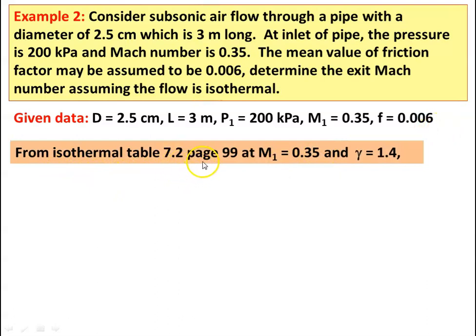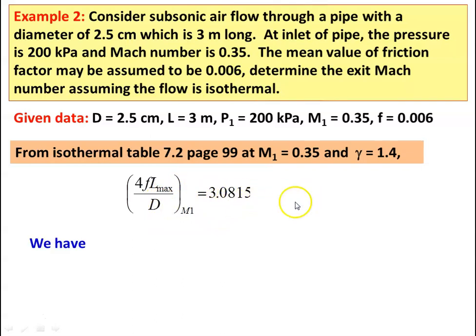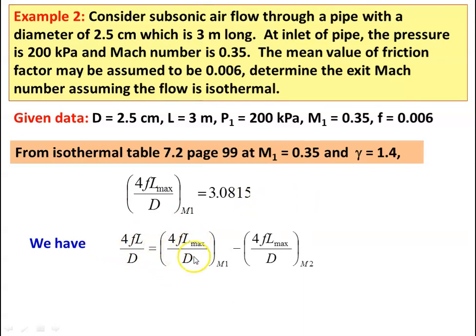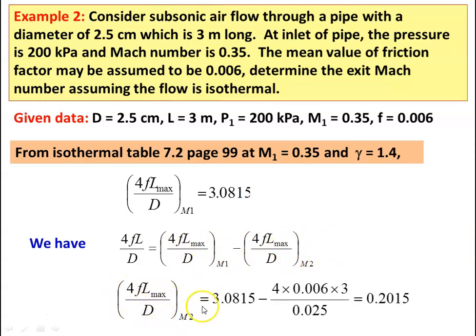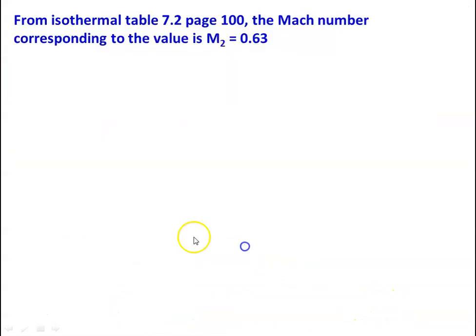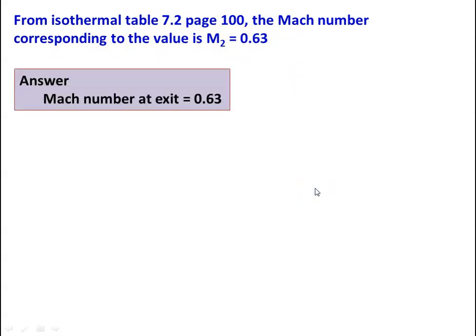From isothermal table 7.2, page 99, at M1 = 0.35 and gamma = 1.4: 4FL_max/D at M1 = 3.0815. We have 4FL/D = (4FL_max/D)|M1 − (4FL_max/D)|M2. So 4FL_max/D at M2 = 3.0815 − (4 × 0.006 × 3) / 0.025 = 0.2015. Referring to the isothermal gas table, page 100, the Mach number corresponding to 4FL_max/D = 0.2015 is M2 = 0.63. Answer: Mach number at the exit is 0.63.